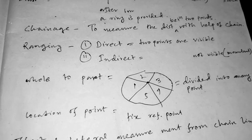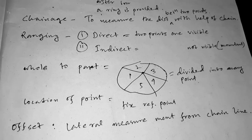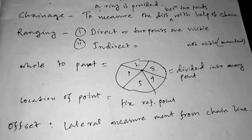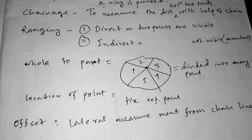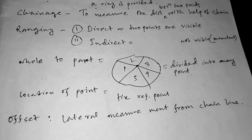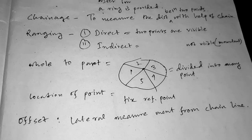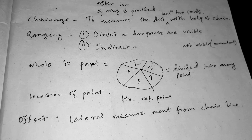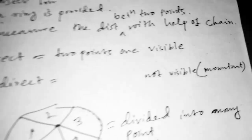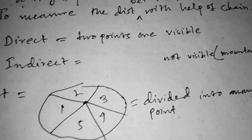Now ranging. Ranging are two types. Number one is direct ranging, where two points are visible. And number two is indirect ranging. In indirect ranging, two points are not visible, for example mountain.